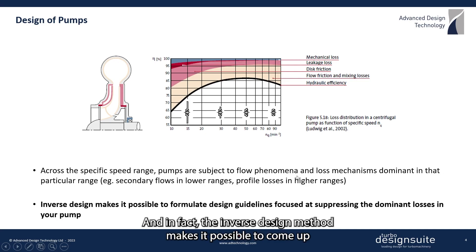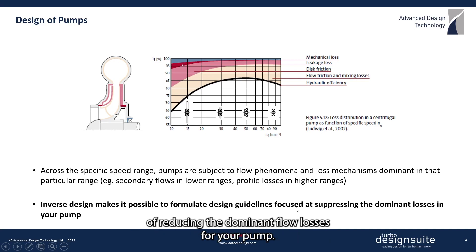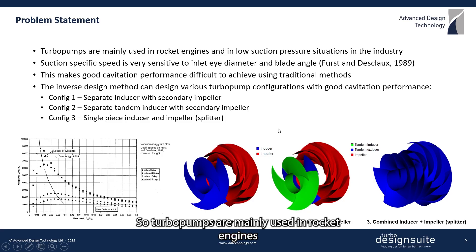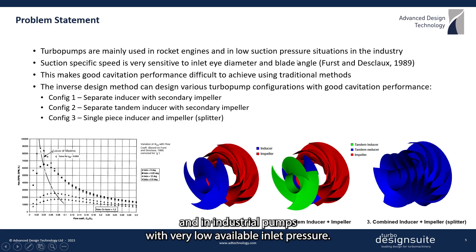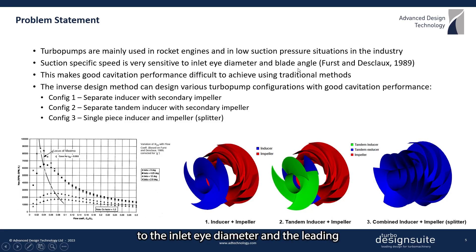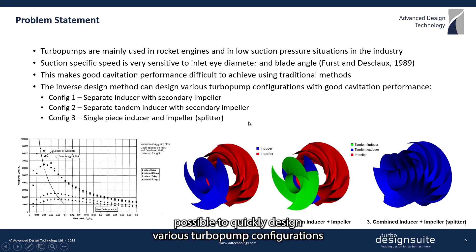The inverse design method makes it possible to come up with a set of optimal design guidelines based on fluid dynamic considerations of reducing the dominant flow losses for your pump. This brings us to our problem statement. Turbopumps are mainly used in rocket engines and in industrial pumps with very low available inlet pressure. Because the suction specific speed is very sensitive to the inlet eye diameter and the leading edge blade angle, this makes cavitation-free performance difficult to achieve using traditional methods. Using the 3D inverse design method, it's possible to quickly design various turbopump configurations under industrial time scales and with good cavitation performance.